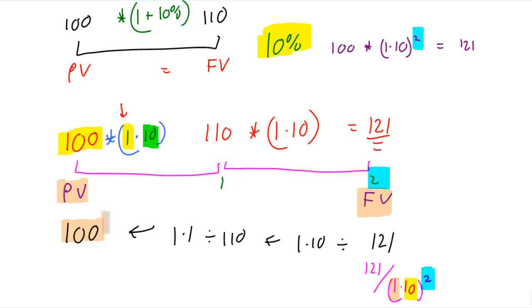So time value of money works in both directions. We can discount 121 to move back to the present value, or we can grow the present value up to the future value to get to 121. Either way, they're both equivalent. Hopefully now you're comfortable with the time value of money.